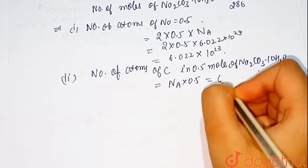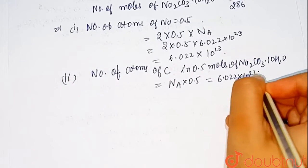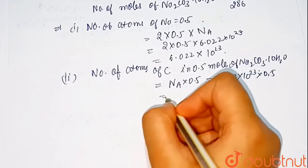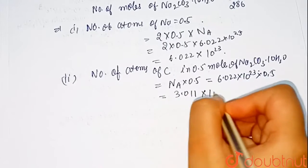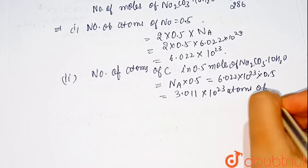NA into 0.5 which is equal to 6.022 times 10 raised to power 23 times 0.5 which equals 3.011 times 10 raised to power 23 atoms of carbon.